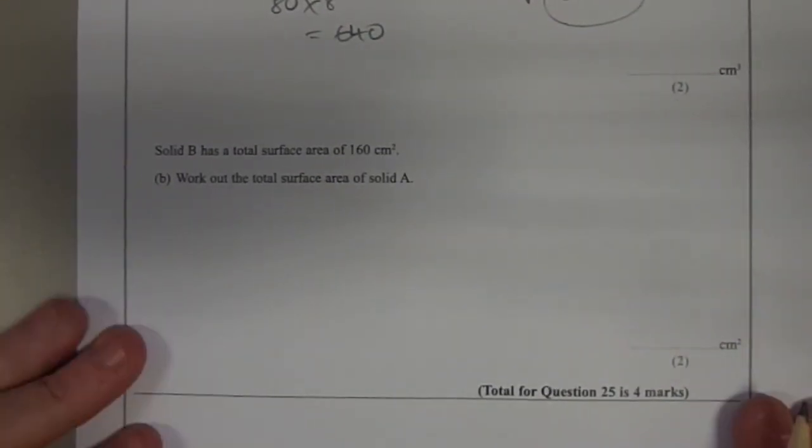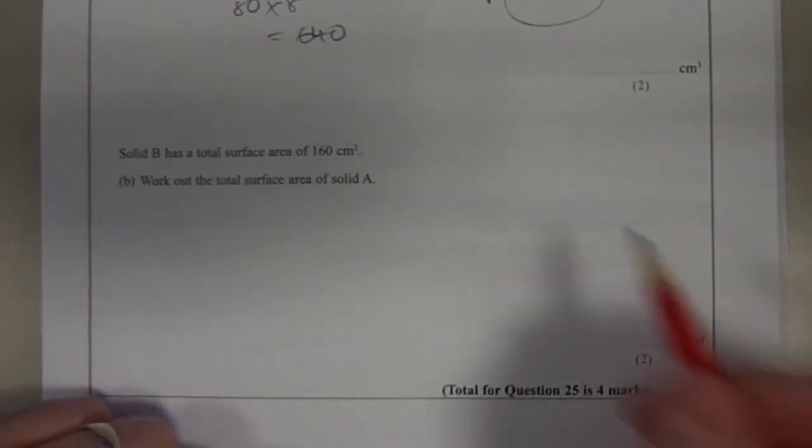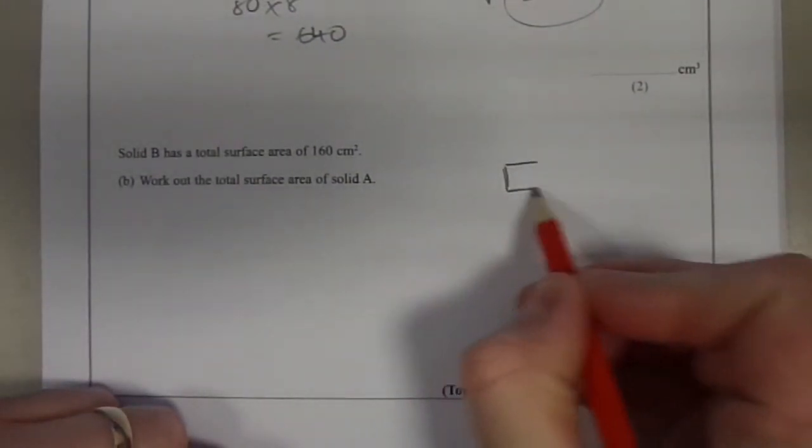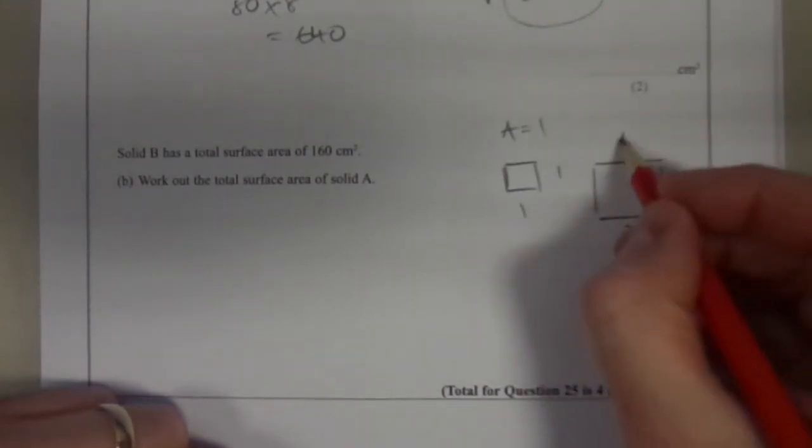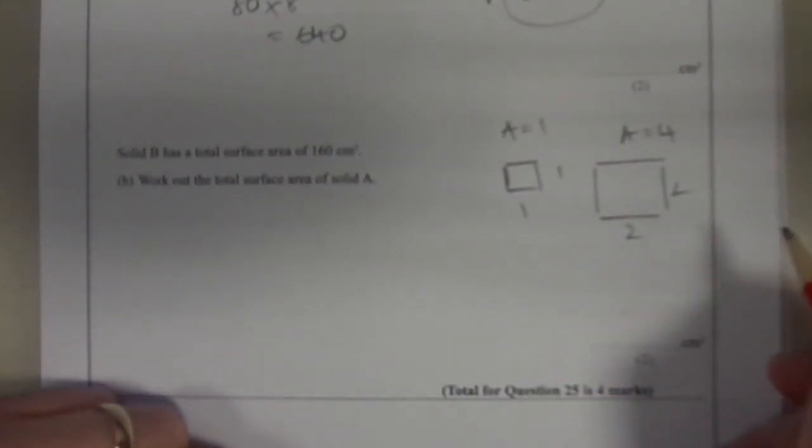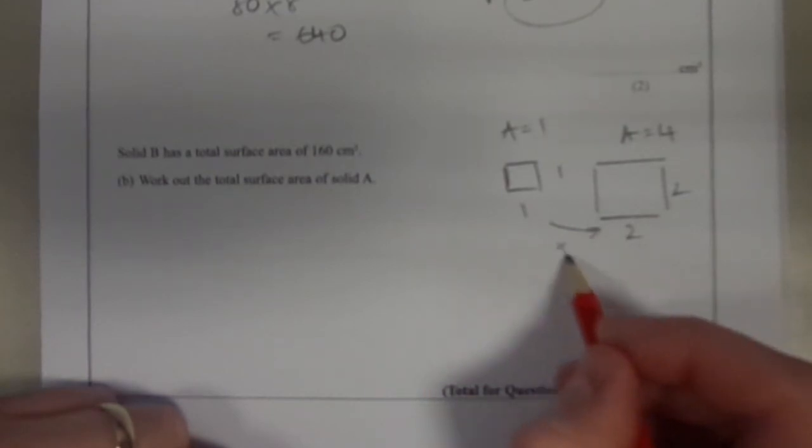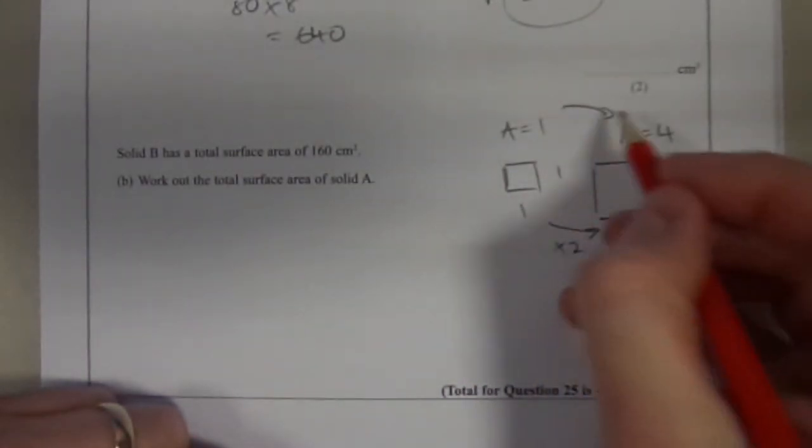Part B, same kind of idea, but this time with area. Let's take a small square, which is 1 by 1. It has an area of 1 centimetre squared. Let's make that square twice as big, so it's now 2 by 2. That has an area of 4 centimetre squared. Although the length is twice as long, the area is 4 times as big.